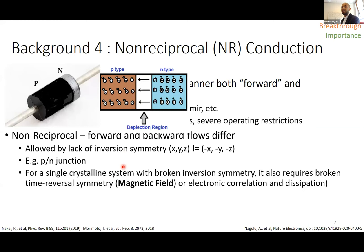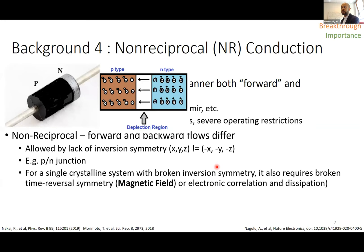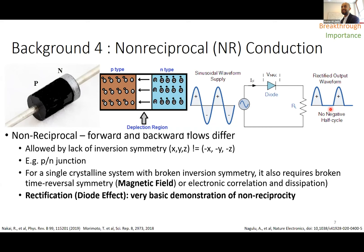In a single crystalline system you also need to break time reversal symmetry — or as one speaker will mention, you also need electronic correlation and dissipation. The diode effect, or rectification, is one of the most basic demonstrations of non-reciprocity in conduction: if you apply a sinusoidal waveform, you delete essentially half that wave — the negative side is disallowed. Non-reciprocal conduction is important for many components in modern technology, from isolators, circulators for quantum computing, active transistors, and wireless transmitters, all the way to quantum computing.